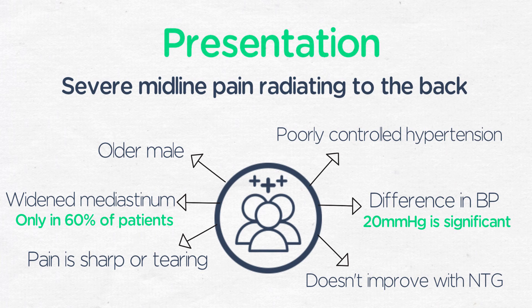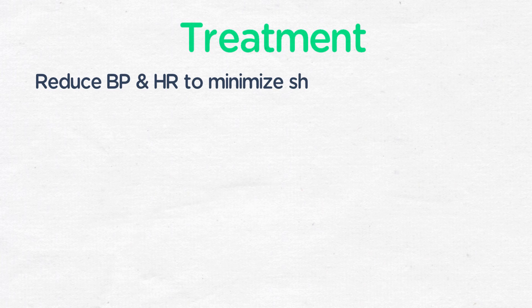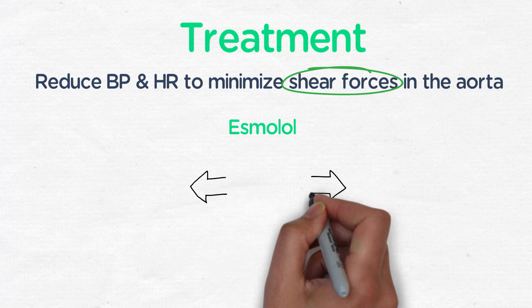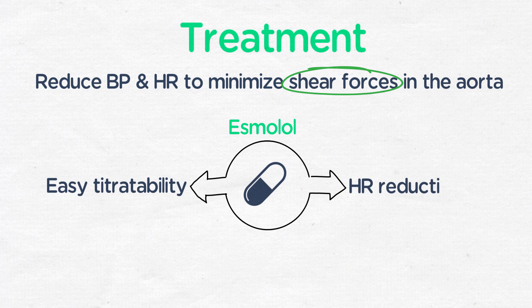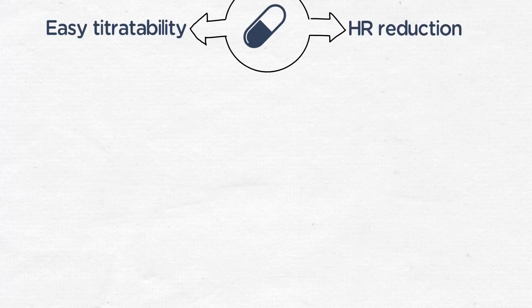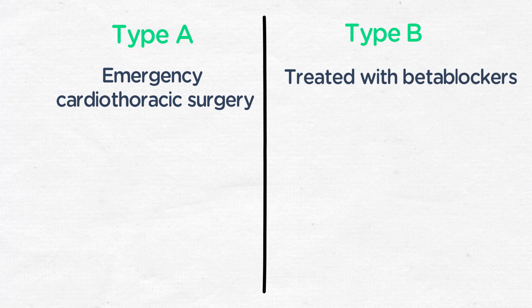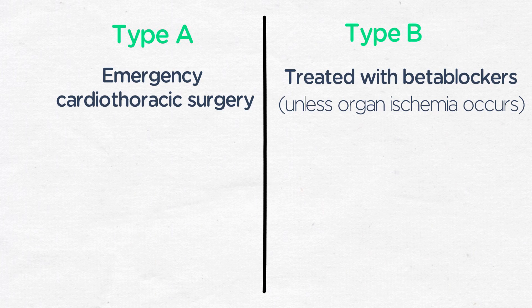The study of choice is a CT angiogram. Management involves reducing blood pressure to the heart and minimizing shear forces in the aorta. Esmolol is often the drug of choice for its easy titratability and heart rate reduction. Avoid using a vasodilator such as nitroprusside to reduce the blood pressure without first administering a beta blocker, since the reflex tachycardia can worsen shear forces. Type A dissections require emergency cardiothoracic surgery. Type B dissections are usually managed medically with beta blockers, unless a branch artery is involved that is causing acute organ ischemia.